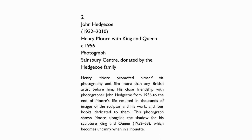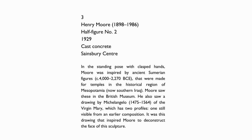Henry Moore promoted himself via photography and film more than any British artist before him. His close friendship with photographer John Hedgecoe, from 1956 to the end of Moore's life, resulted in thousands of images of the sculptor and his work, and four books dedicated to them. This photograph shows Moore alongside the shadow of his sculpture King and Queen, 1952 to 53, which becomes uncanny when in silhouette.